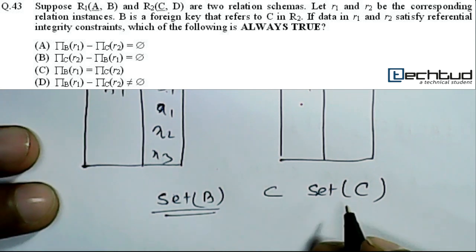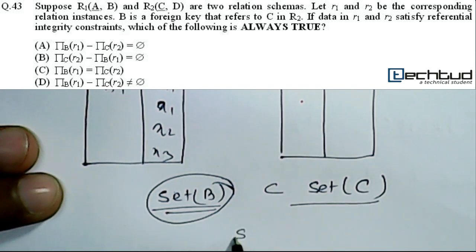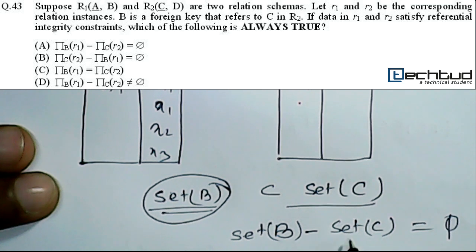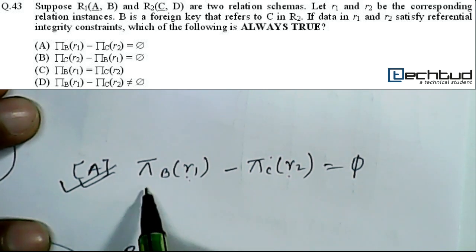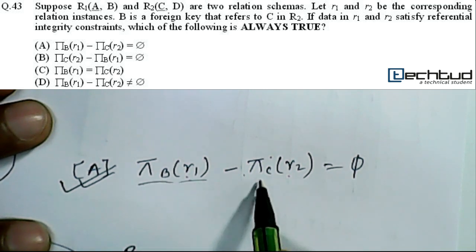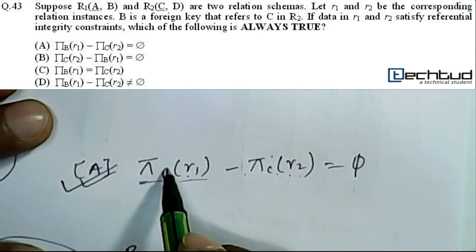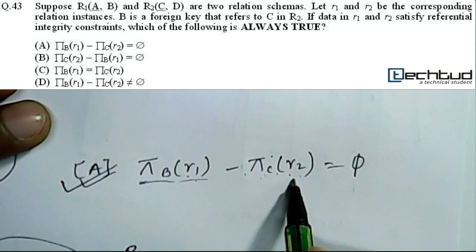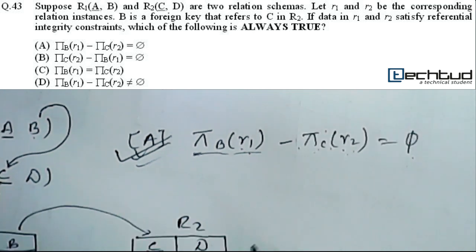At any time, if we compute set B minus set C, this will be a subset of φ — that is, it will be empty — because C is a superset of B. And that is exactly what the question states: π(B, R1) minus π(C, R2) equals φ. This means all the B values in R1 minus all the C values in R2 equals φ, which is always true. So the correct answer is option A.